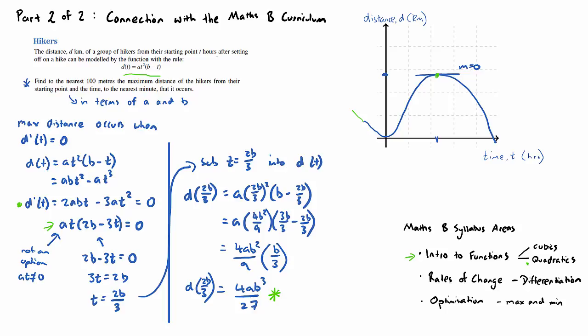It's the understanding that in order to find the maximum distance away from the starting point, the student will need to derive the distance function. So that is the differentiation rules. And then the understanding that in order to find this maximum point, it occurs when the derivative is equal to zero, because the derivative of a function gives us the gradient of the function at that point. And as you can see here, I've illustrated the gradient m is equal to zero.